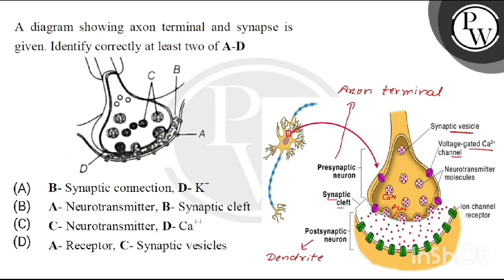Now let's talk about the post-synaptic neuron. What do we mean by its membrane? The post-synaptic membrane. What is present on this post-synaptic membrane? Receptors — shown here in green color. There are also ion channels, like sodium channels and potassium channels. This receptor is a chemo-receptor.